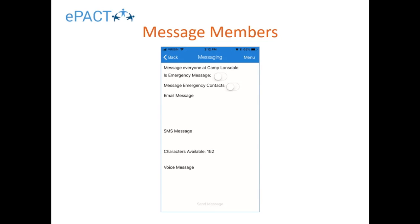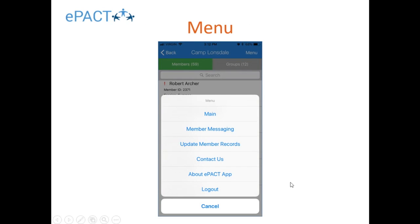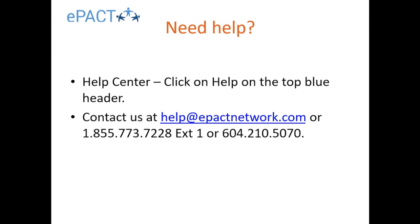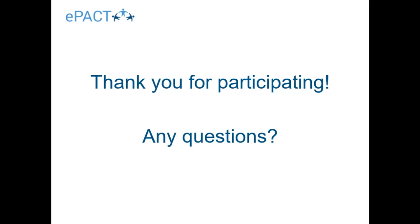Messaging has been added to the app, so you can send a message directly through the app as long as you have an internet connection — to the entire organization or specific groups. You can indicate whether it's an emergency message and whether to include emergency contacts, fill in your email, text, and voice message, and click Send Message. Finally, as a best practice always go to the menu and click Log Out to ensure privacy and security — though the app will automatically log you out after 30 minutes of inactivity. Thank you so much for bearing with me — if you need help, use the Help Center or reach us by email and phone.